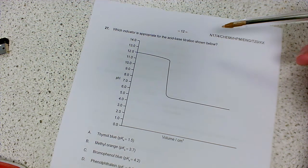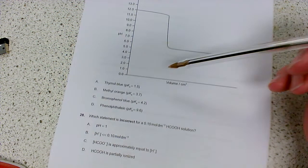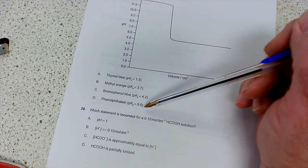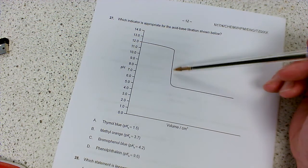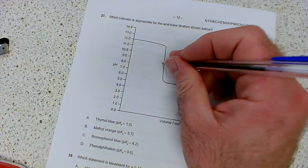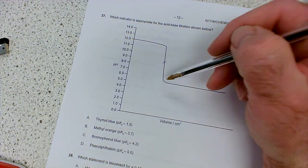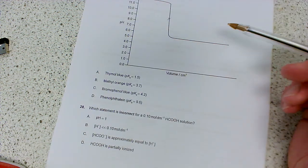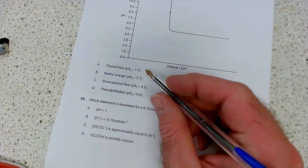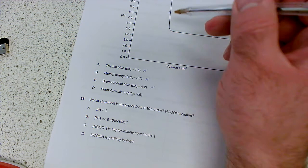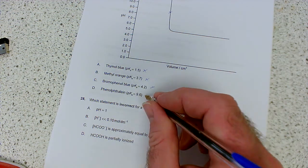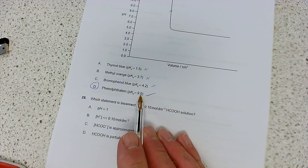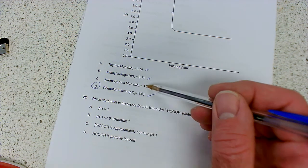Which indicator is appropriate for the acid-base titration shown below? So we've got a range of indicators down here. Now, the bottom line is we need an indicator with a pKa value which comes around about the equivalence point. The equivalence point is around about halfway up that line where we're meeting neutralization. So that's coming in at around about eight and a half or so. So looking at something that comes close to that, well, that's down to 1.5, 3.7, 4.2. They're nowhere near the equivalence point. So we need this one here. Okay, so that's a nice easy way of solving it. They do have a bit of a range around its pKa value. But like I say, these ones are a way out.